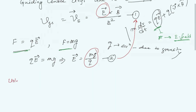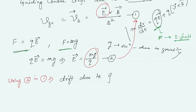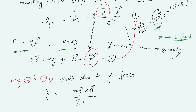Using equation two in equation one — replacing E by mg/q — we get the drift due to gravitational field: v_g = mg×B / (qB²). This is equation number three.